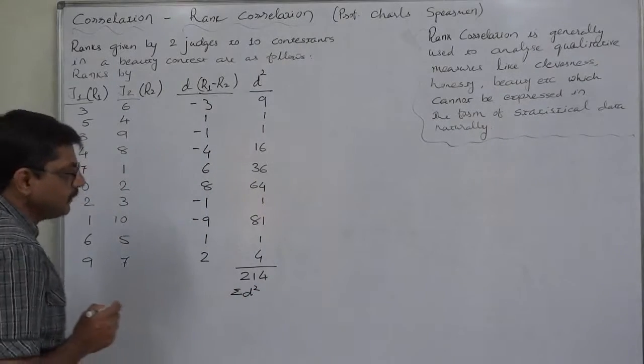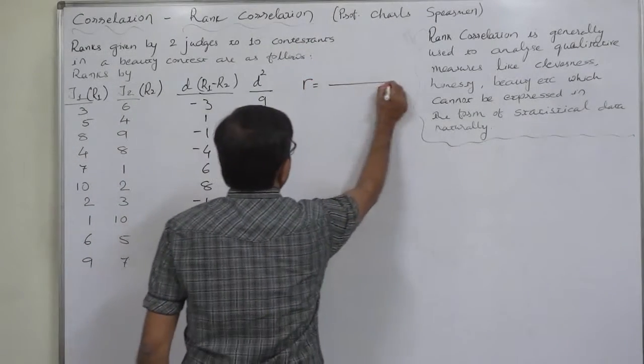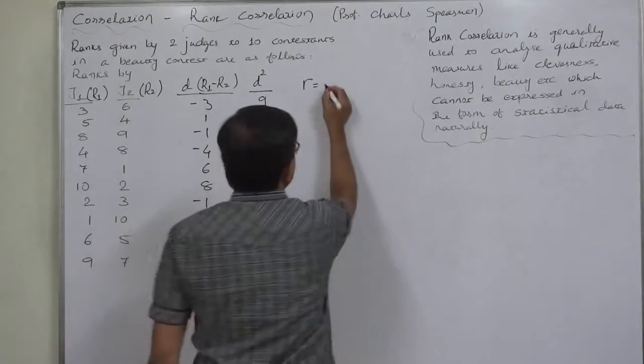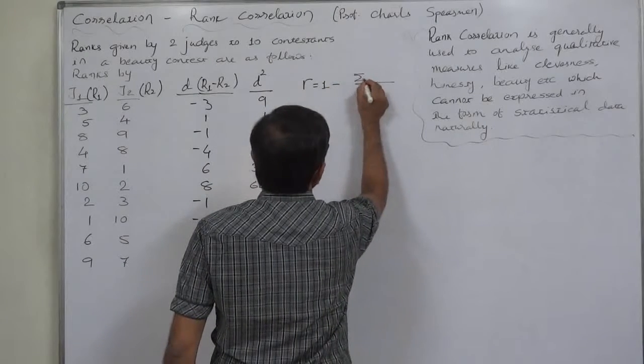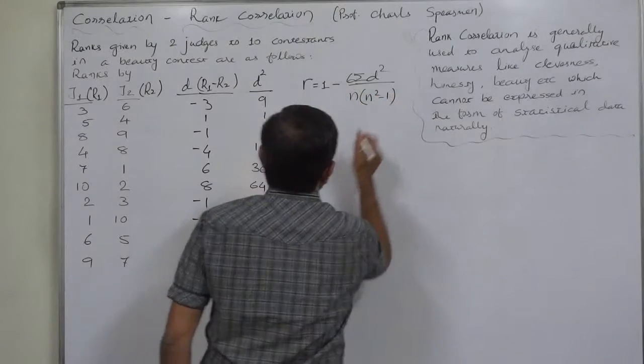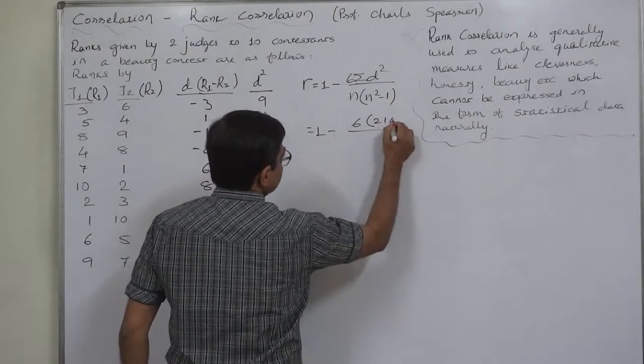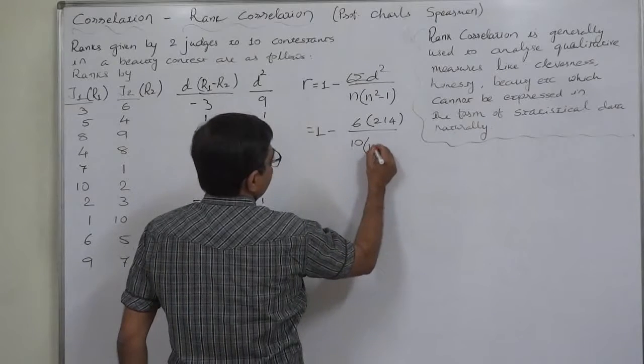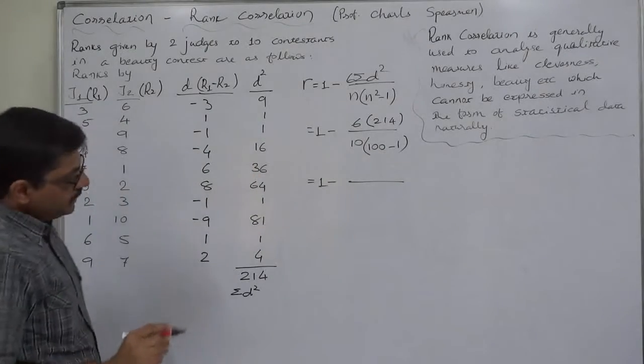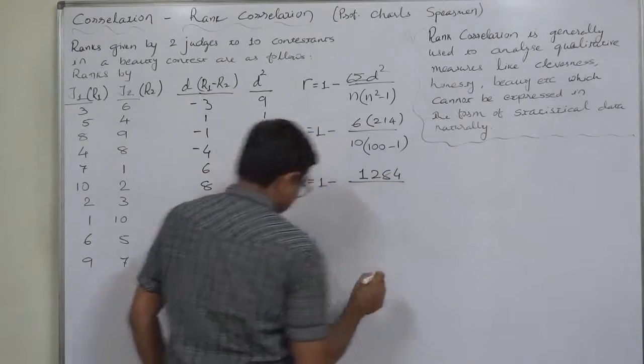A very simple formula is to be followed to find out the coefficient of correlation and the coefficient of rank correlation is equal to 1 minus 6 sigma d square upon n into n square minus 1. That is 1 minus 6 into 214, in this case, upon 10 into 10 square means 100 minus 1. That is 1 minus 6 into 214 is 1284.